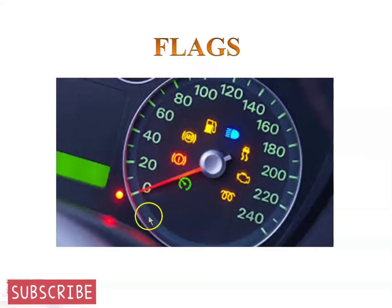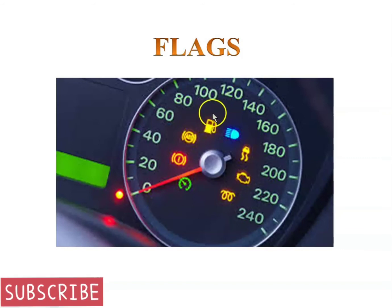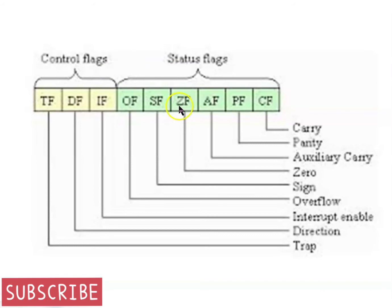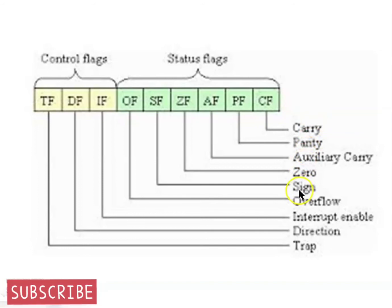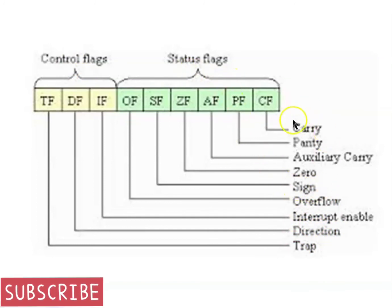Flags — just imagine the dashboard of a car. There are a number of indicators, and each light has a unique purpose: one comes on when fuel is low, another for low coolant level, the handbrake, and so on. Similarly, there are a number of indicators in a processor, where each one indicates the result of a previous operation and can be represented with a single bit. For example, the addition of two numbers might produce a negative sign, a carry, a zero, or an error overflow. All these flags are grouped together to form a single number called the flag register. The control flags control how the processor runs, while the status flags are usually set by the previous operation.